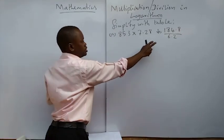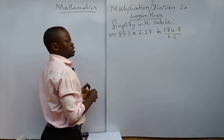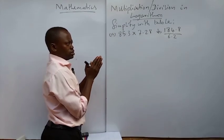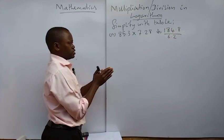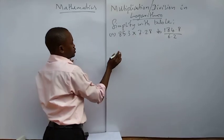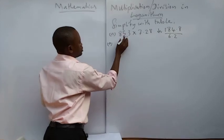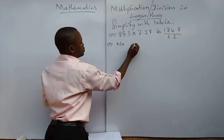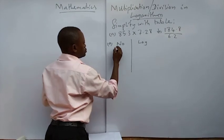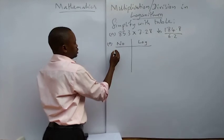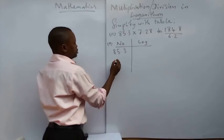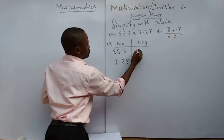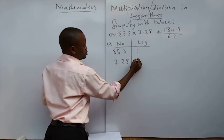Multiplication and division in logarithm of numbers, and I'm going to use these two examples on the board to illustrate it. This one has to do with multiplication, and this one has to do with division. In the first example we have 85.3 times 7.28. So I will write number and log. This is 85.3 and this is 7.28. The characteristics of this is 1 point and the characteristics of this is 0 point.